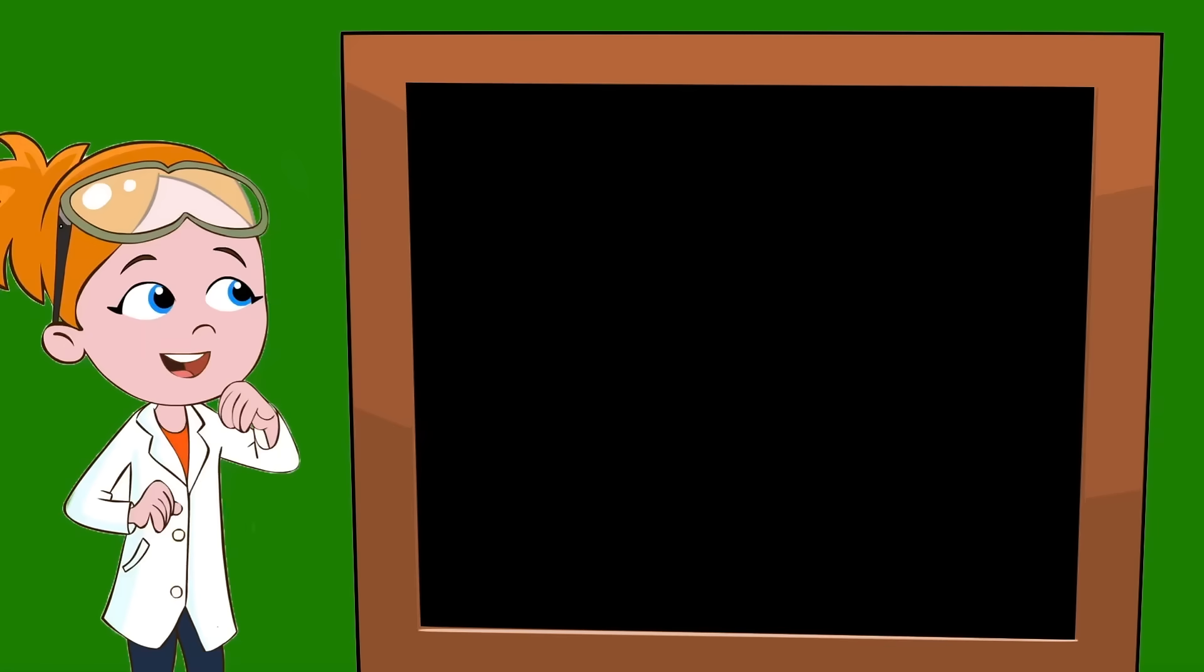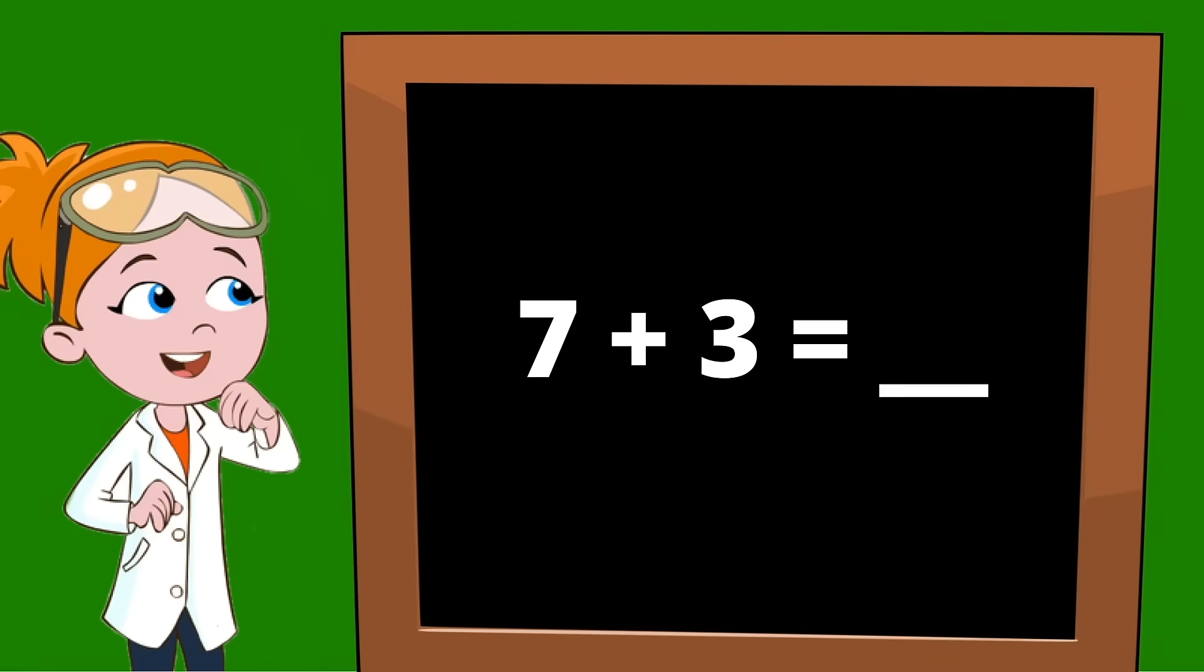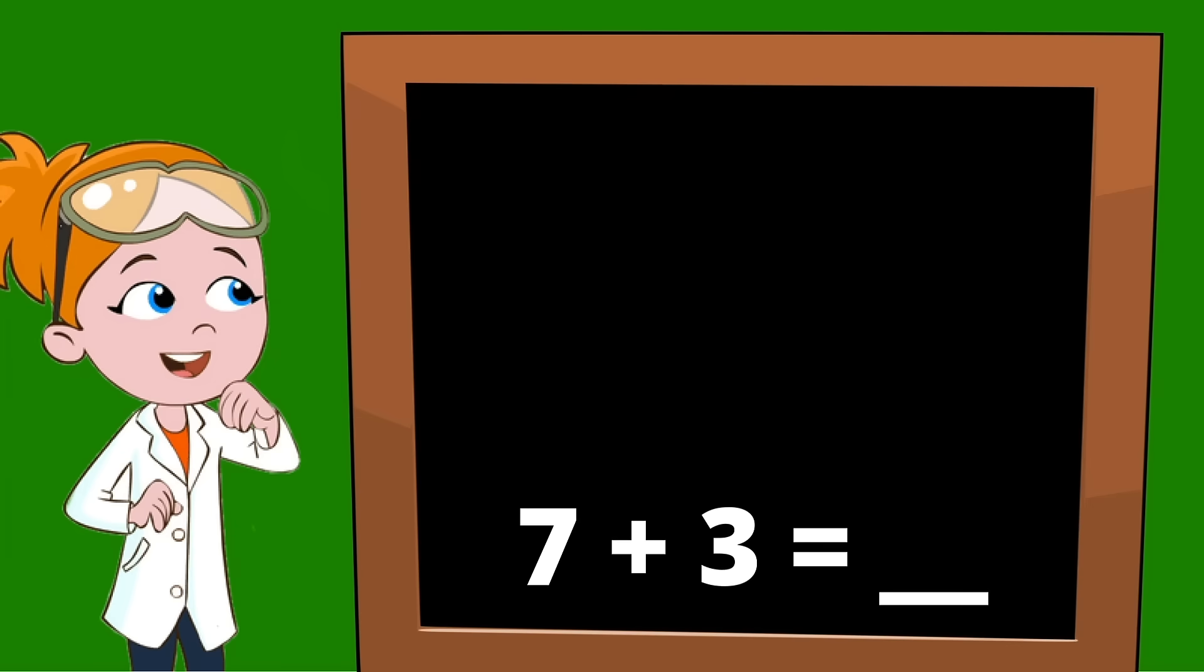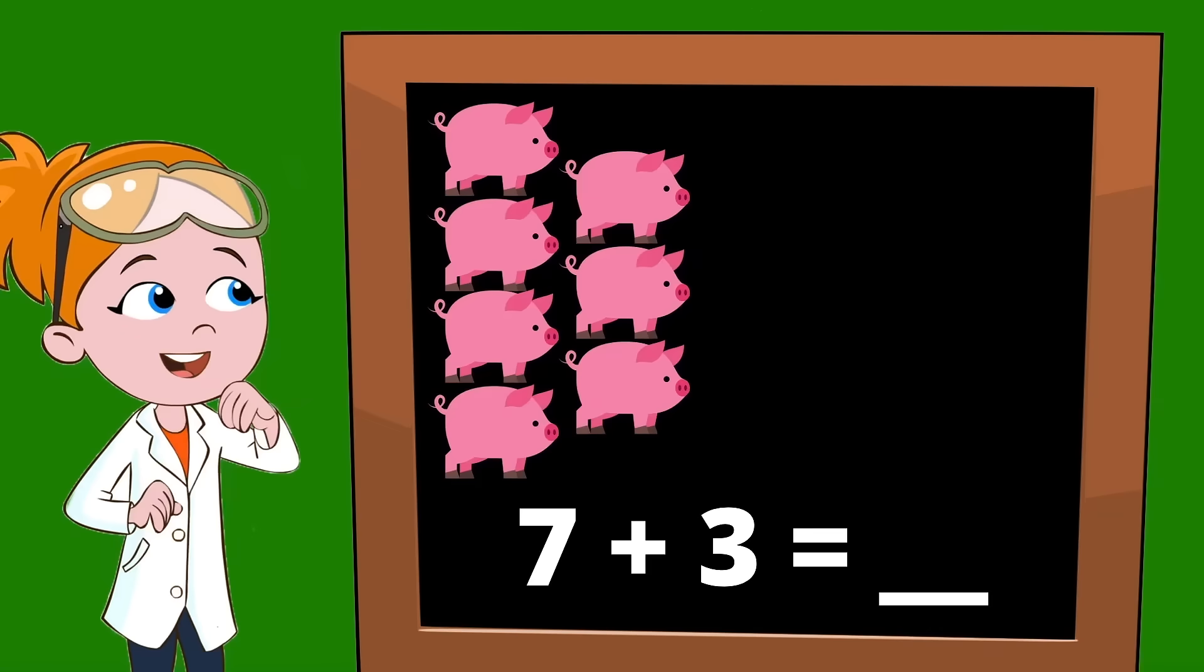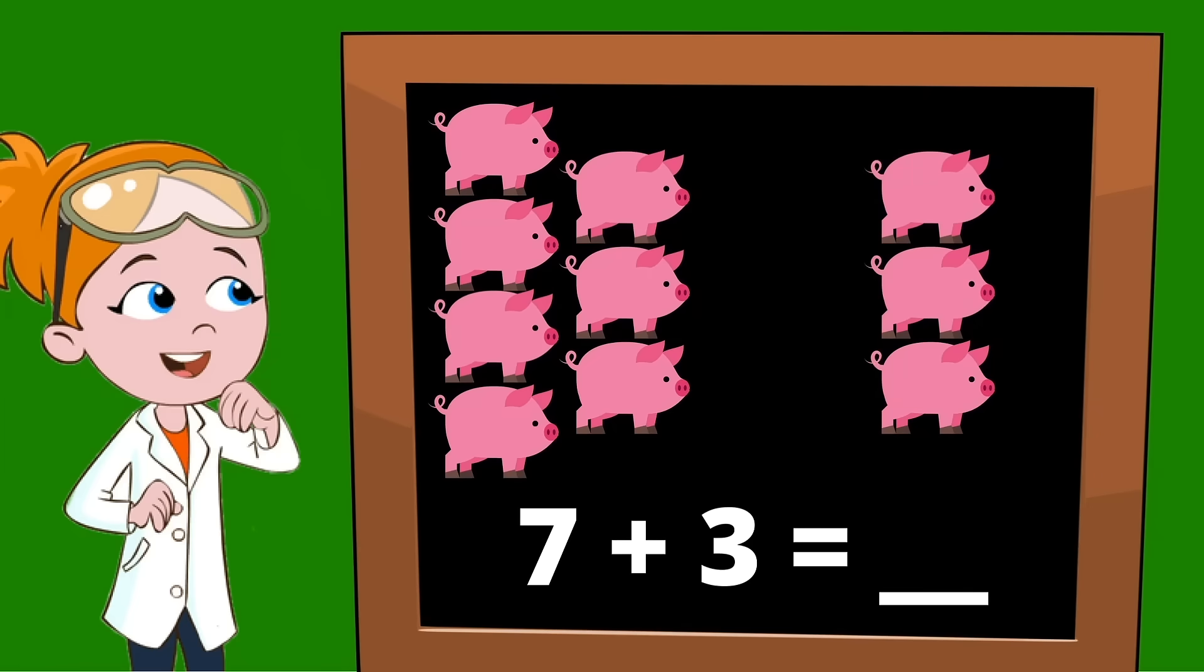Let's do that once more. Let's start with a math problem. How about seven plus three? And let's turn it into a word problem. There were seven little piggies in a pig pen. Then three more piggies came and joined them in the pen. How many piggies are there now? Let's count to find the answer.